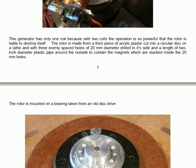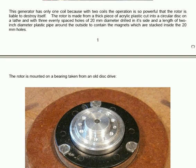It is only one coil because two coils cause it to rotate so powerfully that the rotor is liable to destroy itself. The rotor is made from a thick piece of acrylic plastic cut into a circular disc on a lathe and with three evenly spaced holes of 20mm diameter drilled in its side and a length of 2 inch diameter plastic pipe around the outside to contain the magnets which are stacked inside the 20mm holes.